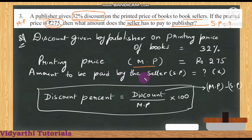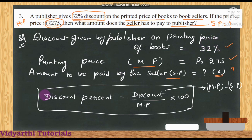Market price is ₹275. The amount to be paid by the seller to the publisher becomes our selling price, which we don't know, so let us consider it as x. We'll use the formula: discount percentage = (market price − selling price) ÷ market price × 100.